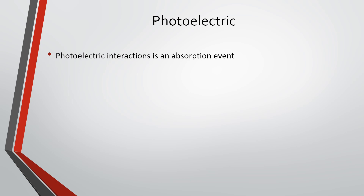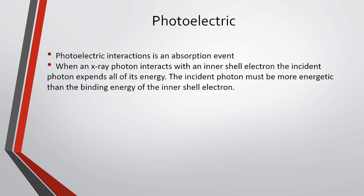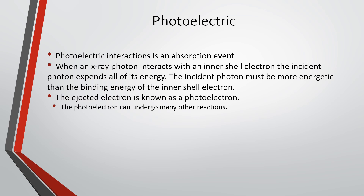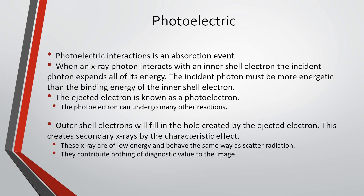The third interaction is the photoelectric effect, which is an absorption event. When an x-ray photon interacts with an inner shell electron, the incident photon expends all of its energy. The incident photon must be more energetic than the binding energy of the inner shell of the atom it's interacting with. It ejects the electron — known as a photoelectron — which can undergo many other interactions. Outer shell electrons then fill in the hole, creating secondary x-rays known as the characteristic effect. These x-rays are low energy, do not typically make it out of the body, and contribute nothing of diagnostic value to the image.